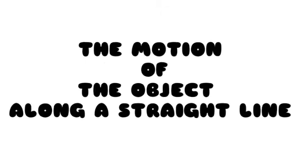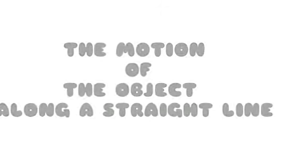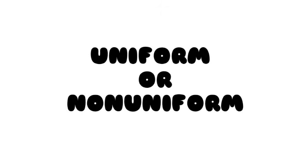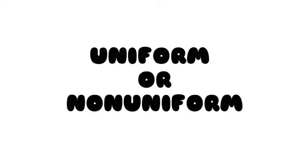In the previous chapter, we described the motion of an object along a straight line in terms of its position, velocity and acceleration. There, we saw that such a motion can be uniform or non-uniform.